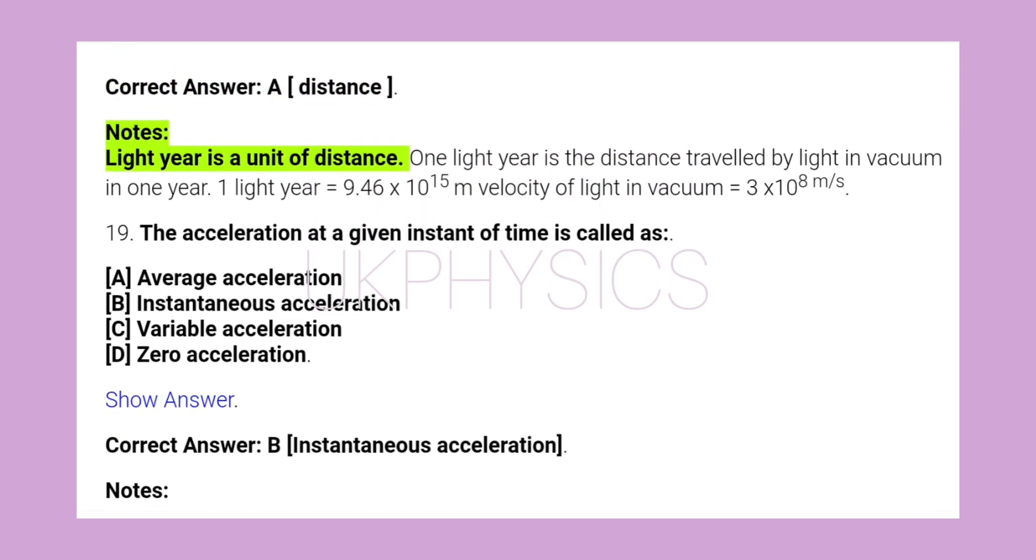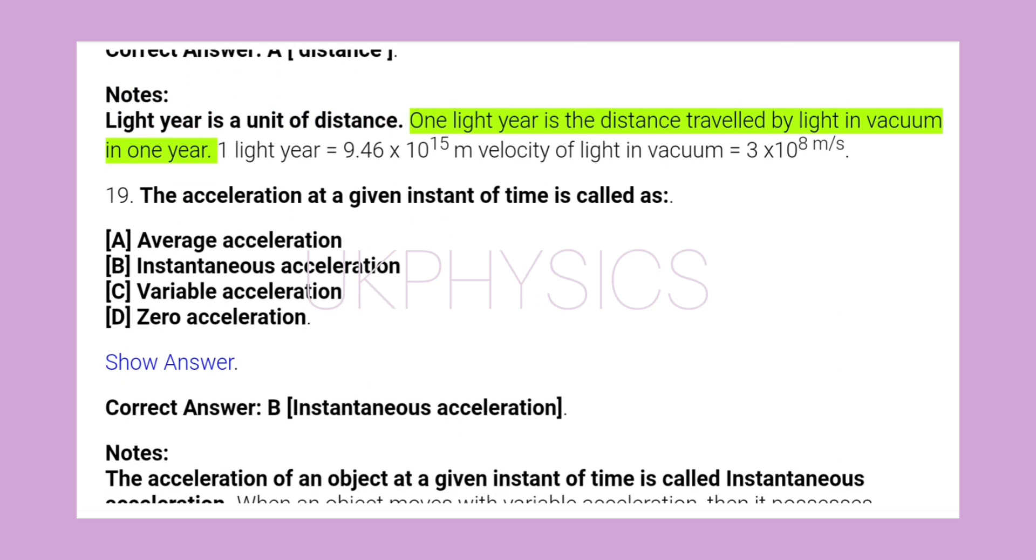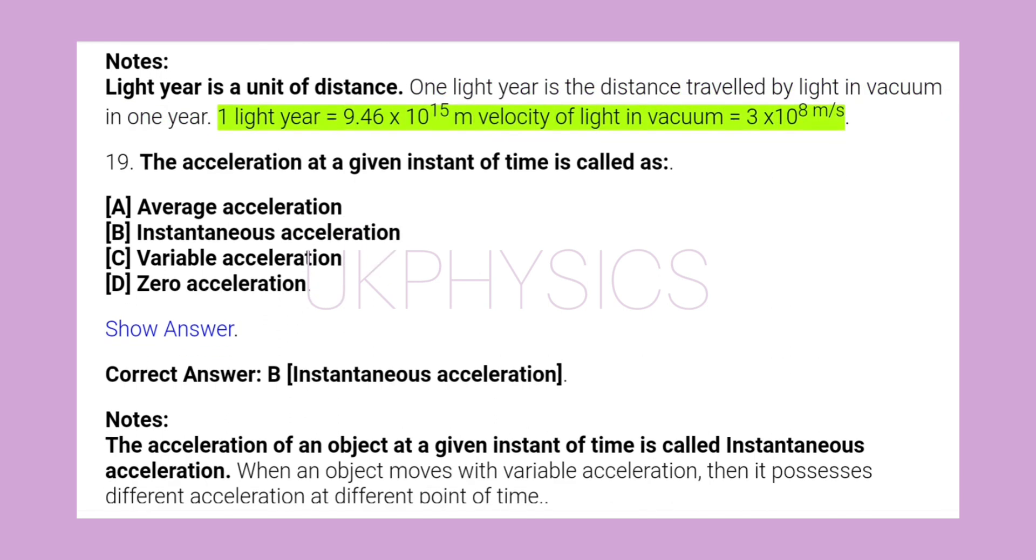Notes: Light year is a unit of distance. One light year is the distance traveled by light in vacuum in one year. One light year equals 9.46 × 10¹⁵ meters. Velocity of light in vacuum equals 3 × 10⁸ meter per second.